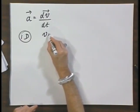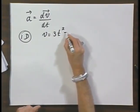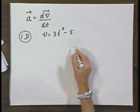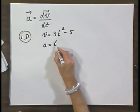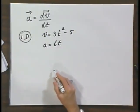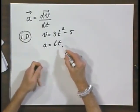So we have now v for instance equals 3t squared minus 5. And so we would then have a equals 6t. And this number could be positive, could be zero, could be negative.